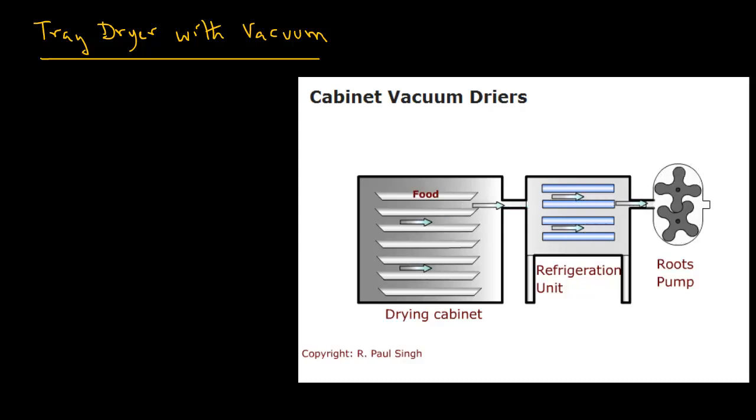In case of a vacuum dryer, the drying is accomplished at lower temperatures than in case of cabinet dryers where we have atmospheric pressure. By using lower temperatures, we can get improvements in product quality.